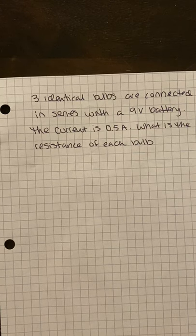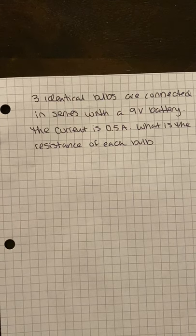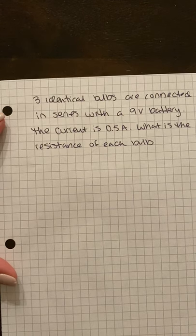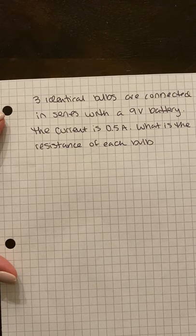Alright, I'm going to do a couple of examples of how to work series circuits. This one says three identical light bulbs are connected in series with a 9-volt battery. The current is 0.5 amps. What is the resistance of each bulb?